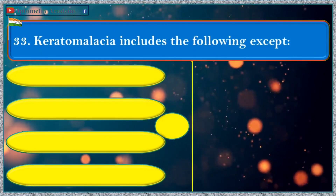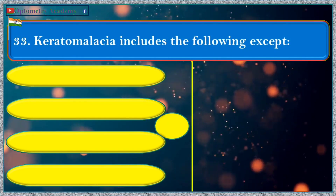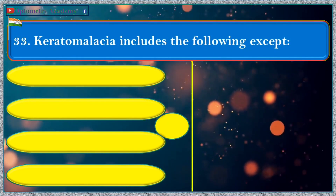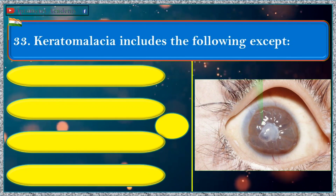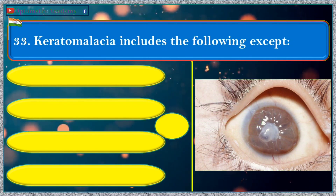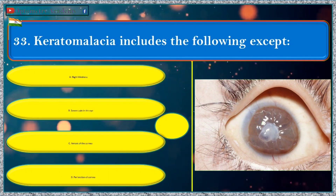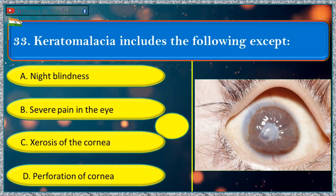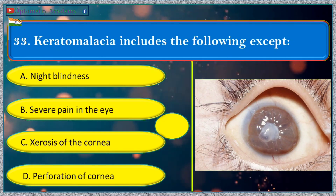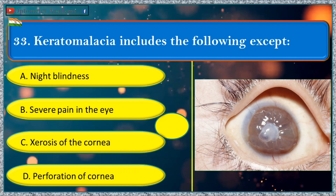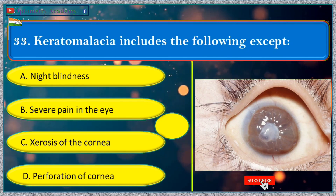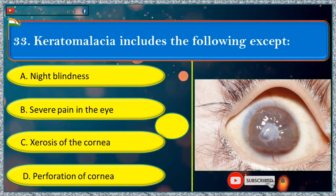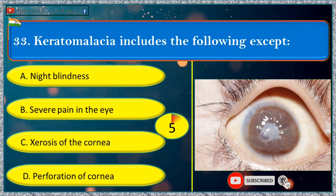Keratomalacia includes the following except: a. night blindness, b. severe pain in the eye, c. necrosis of the cornea, d. perforation of cornea.